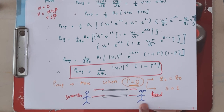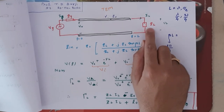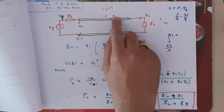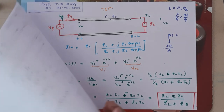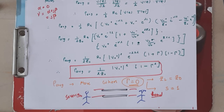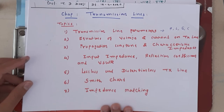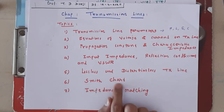In the next lecture we will discuss special cases: first when load impedance Z_L = 0 (short circuit), second when Z_L = ∞ (open circuit), and we compute the reflection coefficient and SWR for each. After that we will discuss the Smith chart and applications of transmission lines.